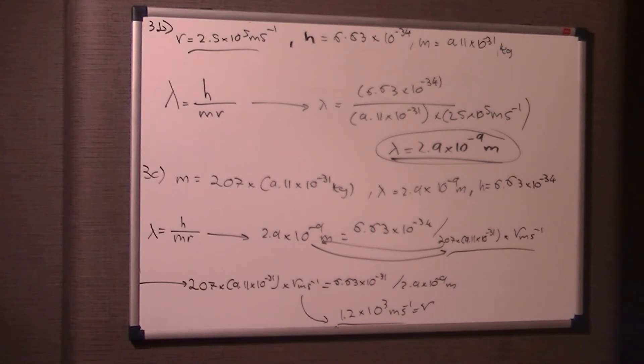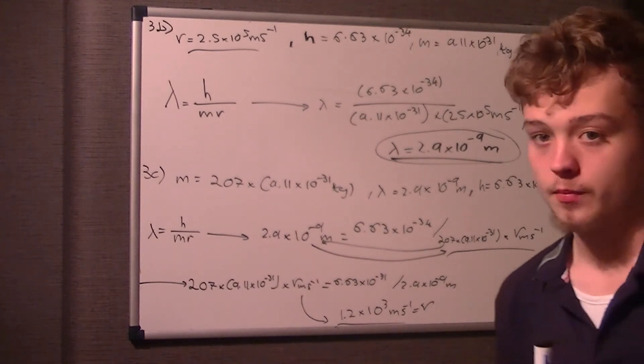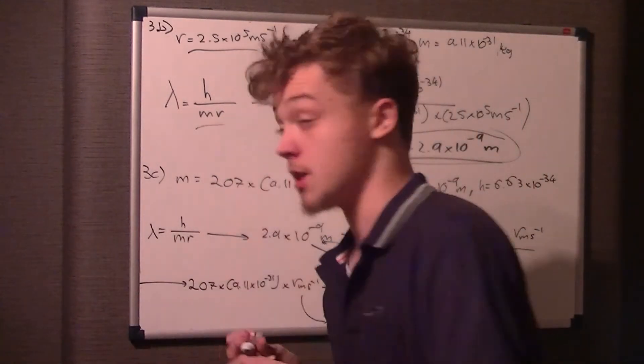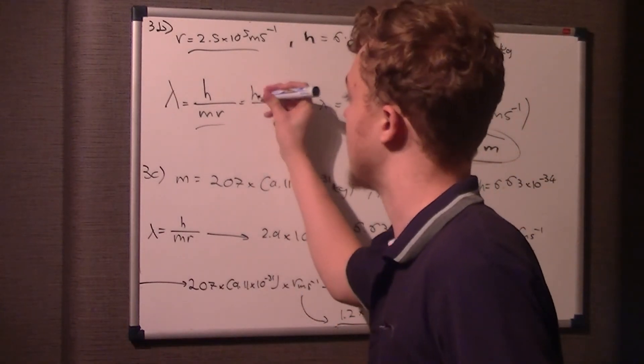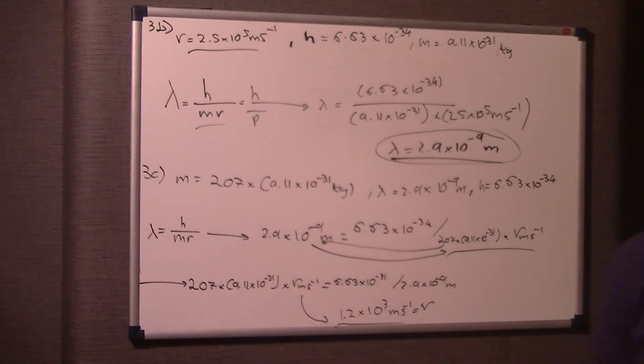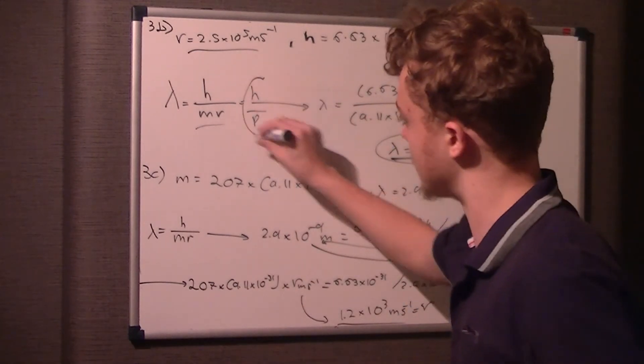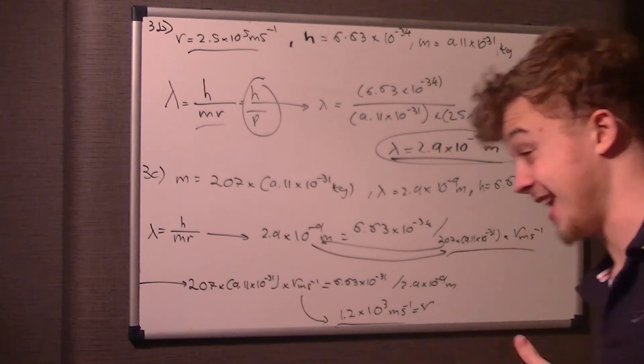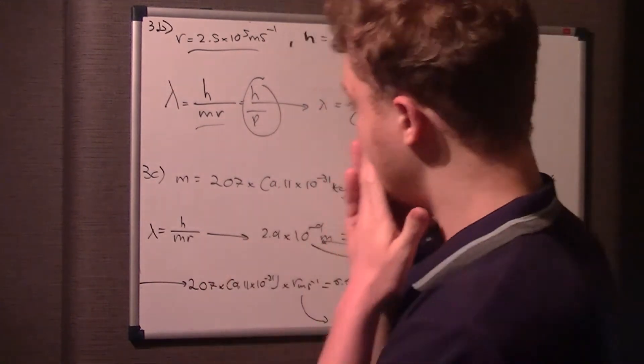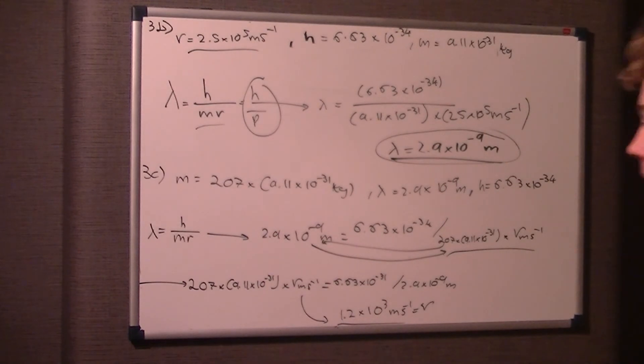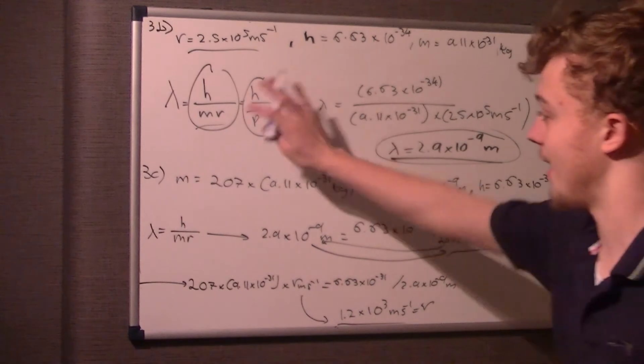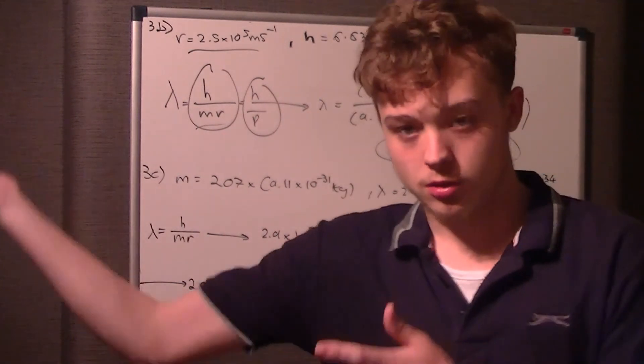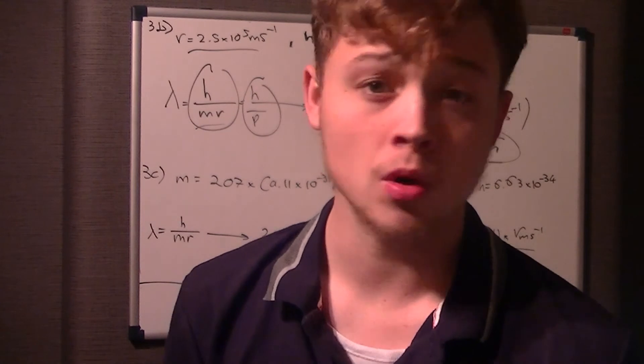Just a bit of note: this mv you could say is momentum, so instead of writing h over mv you could just do h over rho or p, means exactly the same thing. You might see it written as this, which is more relatable if you're doing A2 physics. They might be a bit nasty, so just be aware that those two mean exactly the same thing.